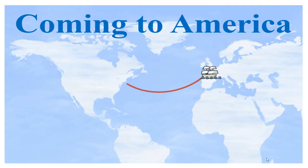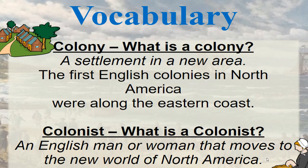We know in the beginning they came from Europe to the Americas. The vocabulary word for our first section is colony. A colony is a settlement in a new area. The first English colonies in North America were along the eastern coast. A second vocabulary word is colonist — an English man or woman that moves to the new world of North America. Remember, fifth graders, our continent is North America.